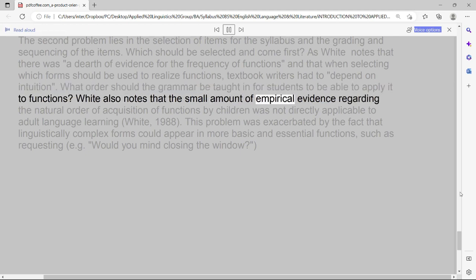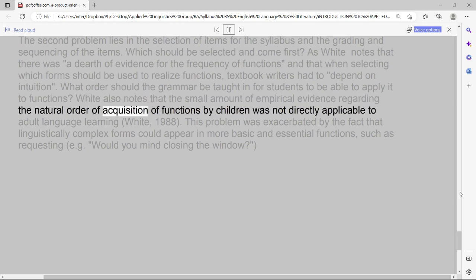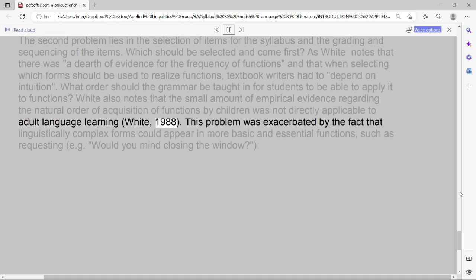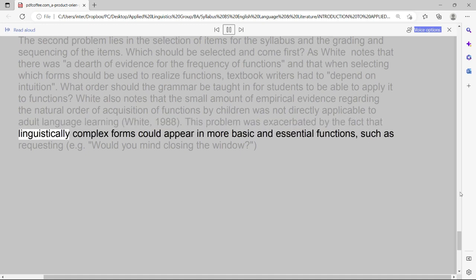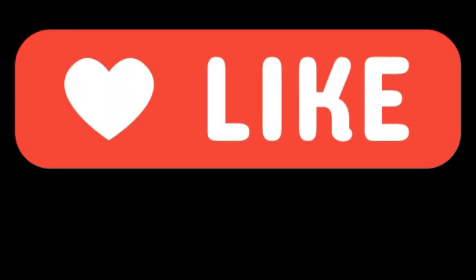White also notes that the small amount of empirical evidence regarding the natural order of acquisition of functions by children was not directly applicable to adult language learning, White, 1988. This problem was exacerbated by the fact that linguistically complex forms could appear in more basic and essential functions, such as requesting, e.g., would you mind closing the window?